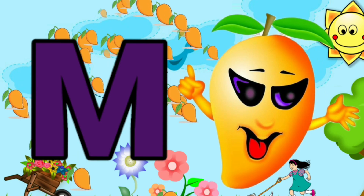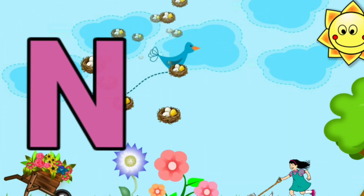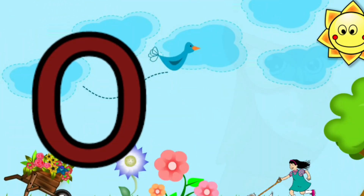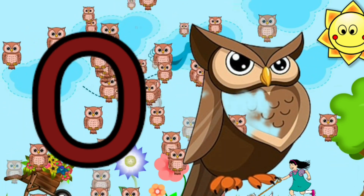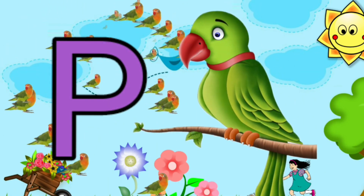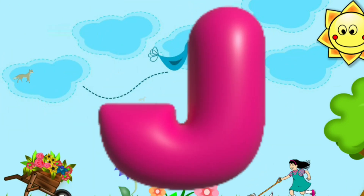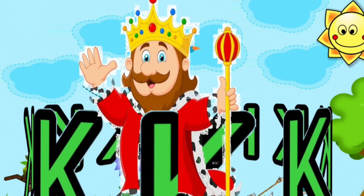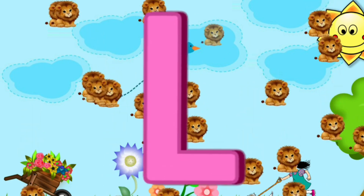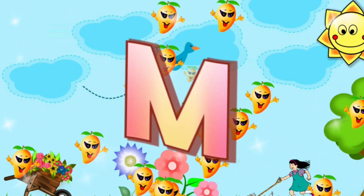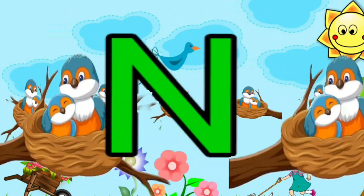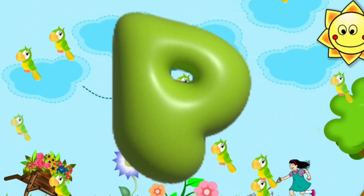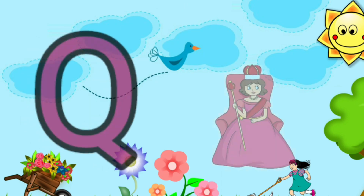M is for mango, m-m-mango. N is for nest, n-n-nest. O is for owl, ow-ow-owl. P is for parrot, p-p-parrot.